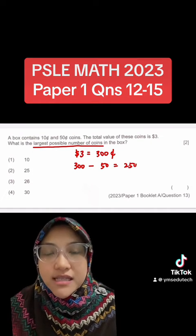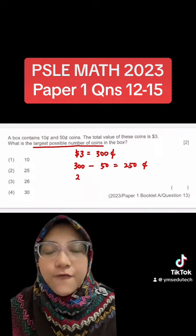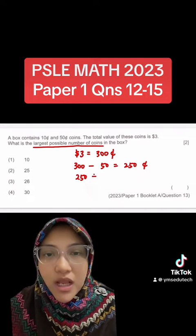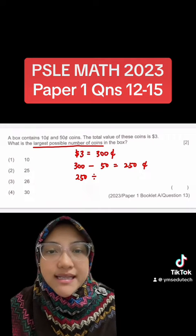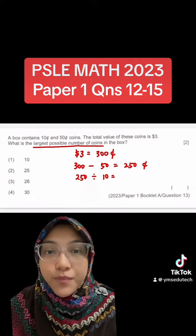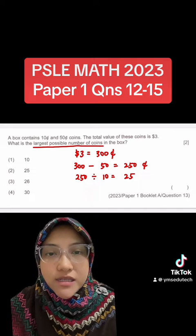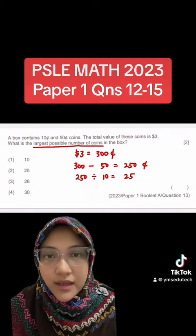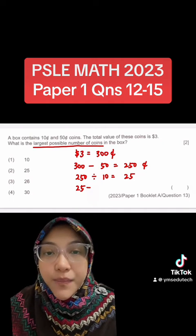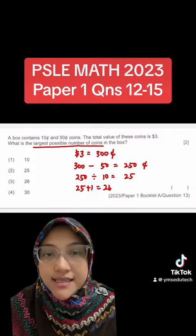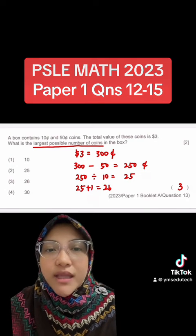Subtract 50 cents from the 300 cents. That gives us 250 cents. Divide the 250 cents by 10 cents to find out the number of pieces of 10 cent coins. That gives us 25 pieces. Add that one piece of 50 cent to the 10 cent. Hence, the answer is 26 pieces.